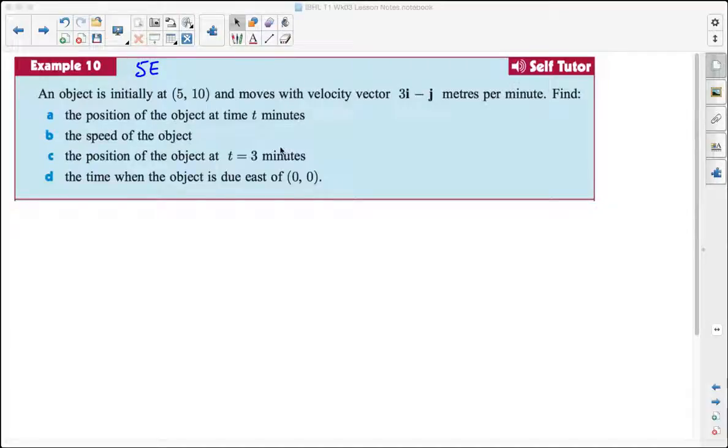So this is from paragraph 5E example 10. An object is initially at the position (5,10), so these are coordinates, and moves with velocity vector 3i take j meters per minute. Find the position of the object at time t minutes.